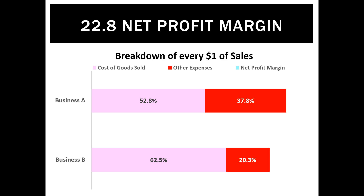Looking at other expenses, Business A has a lot of other expenses — 37.8 cents of each dollar goes on other expenses. Whereas Business B has much better expense control, with only 20.3 cents in every sales dollar on other expenses. That leaves the bit at the end: the net profit is the product of not only other expenses but also cost of goods sold. Business B has almost double the net profit margin of Business A — for every sales dollar, a net profit of 17 cents is earned, all because of better expense control.